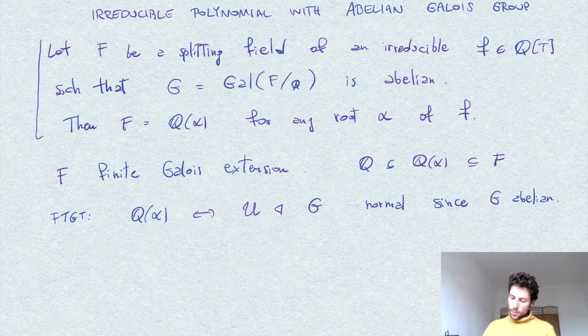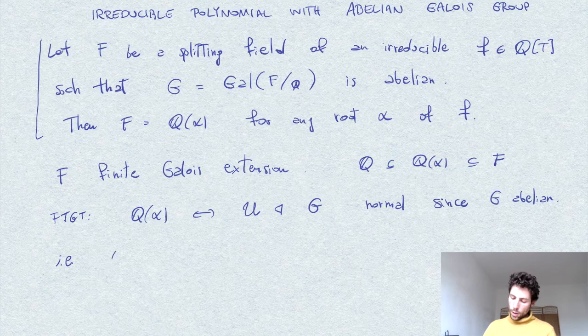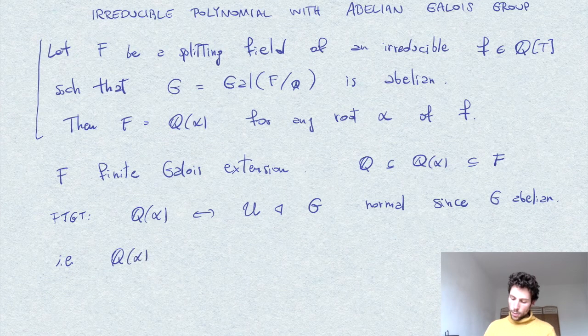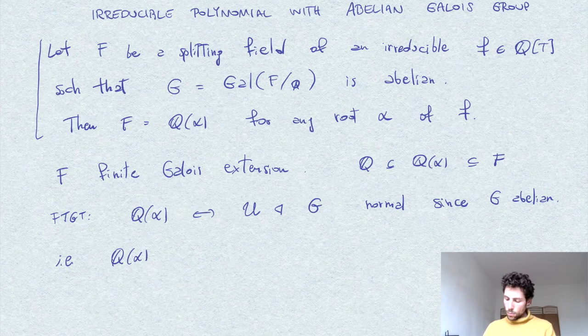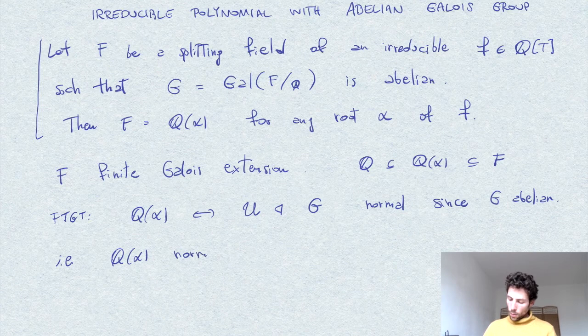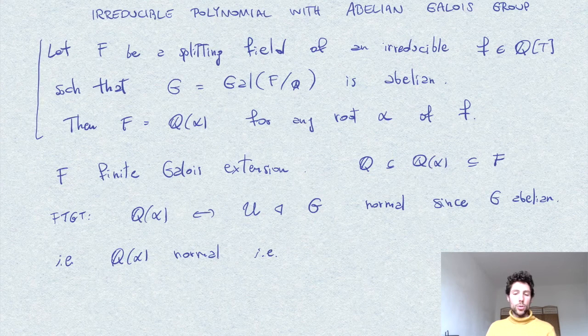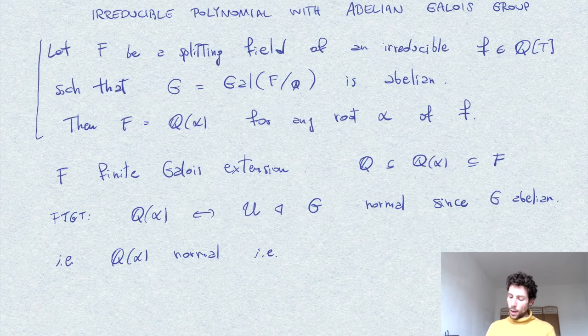And this means that Q of alpha is a normal extension, that is it contains all the roots of F.